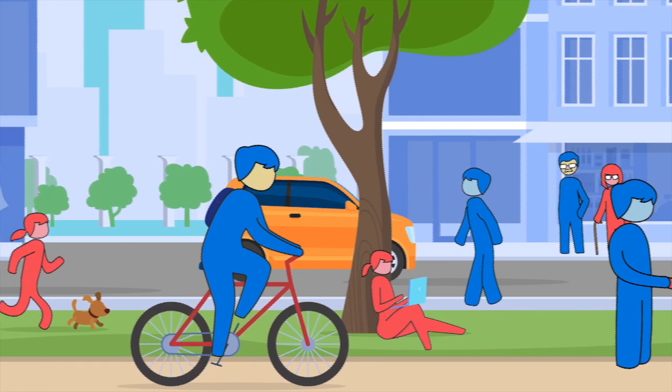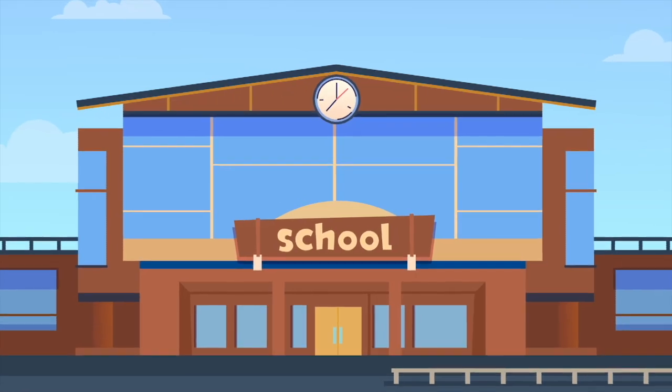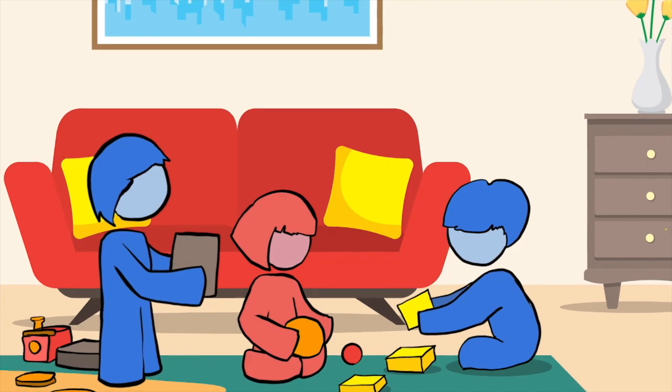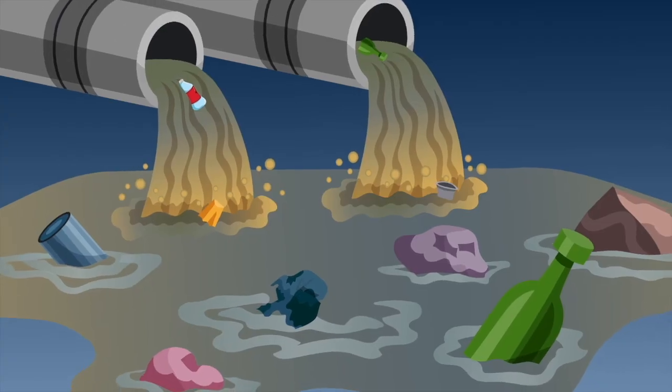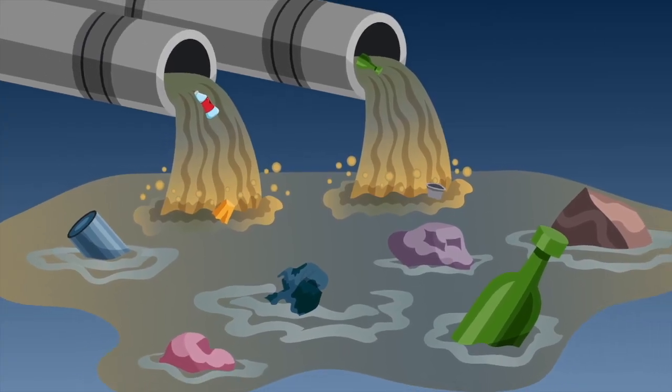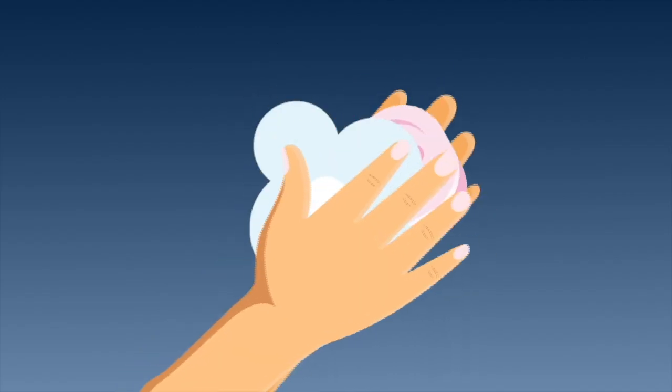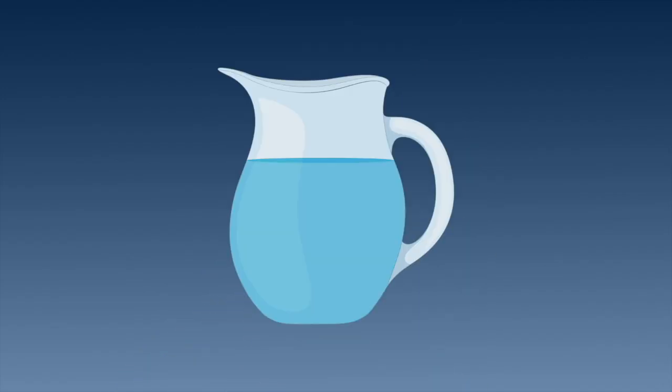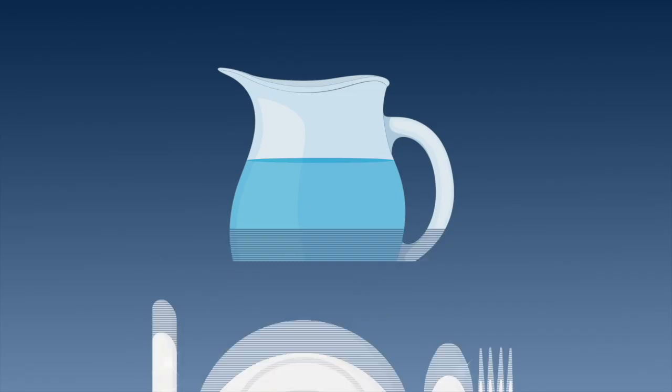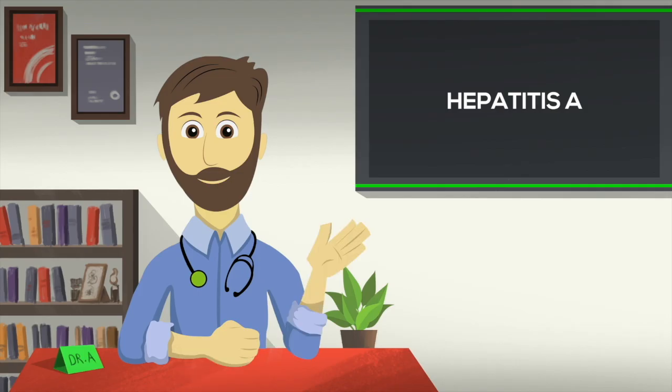Many hepatitis A outbreaks in local communities such as schools, daycare centers or other places are related to contamination of water supply or spread of infection through an infected person in that community. Make sure everyone practices good hand washing. Use clean drinking water and clean utensils to prevent such outbreaks. If we all work together, we can protect ourselves and others.